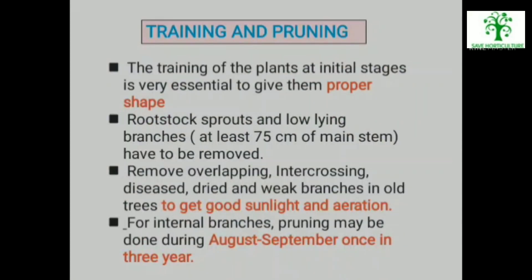Training and Pruning: Training of plants at initial stages is very essential to give them proper shape. Rootstock sprouts and low-lying branches at least 75 cm of main stem have to be removed. Removal of overlapping, inter-crossing, diseased, dried and weak branches in old trees to get good sunlight and aeration is essential. For internal branches, pruning may be done during August to September once in 3 years.